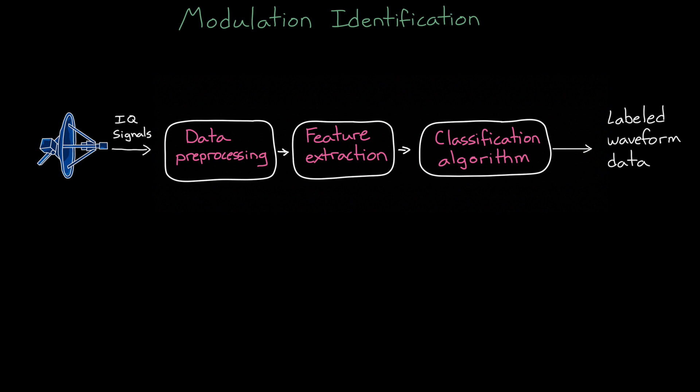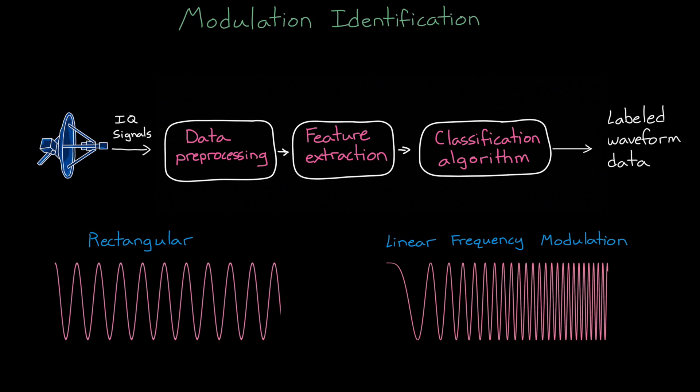And it kind of feels like building a system that can distinguish between, say, these two waveforms is pretty straightforward. They look quite unique to each other. Unfortunately, things can get pretty complicated in a hurry, which can make pattern recognition with traditional methods difficult, or at the very least, time consuming.